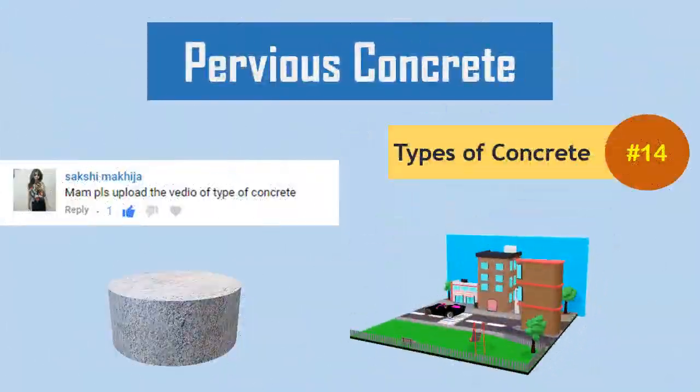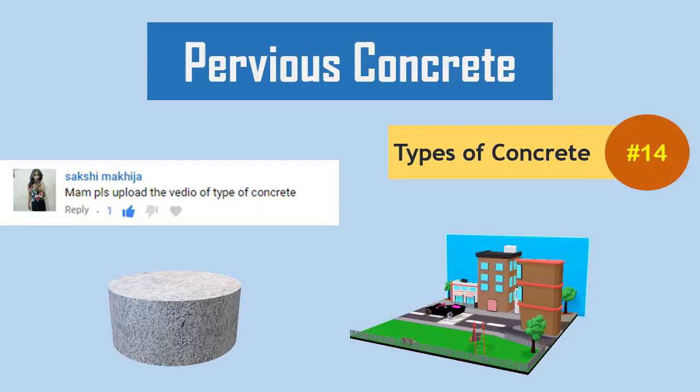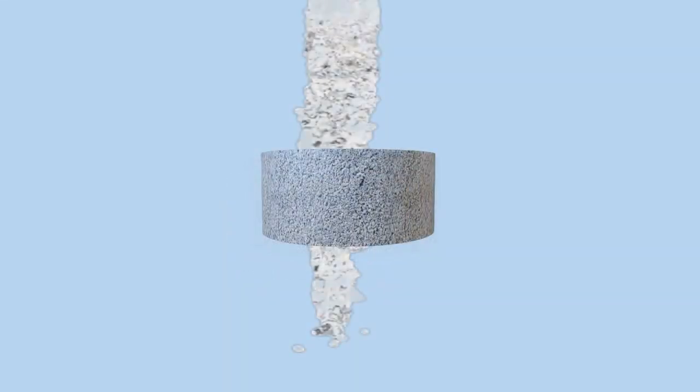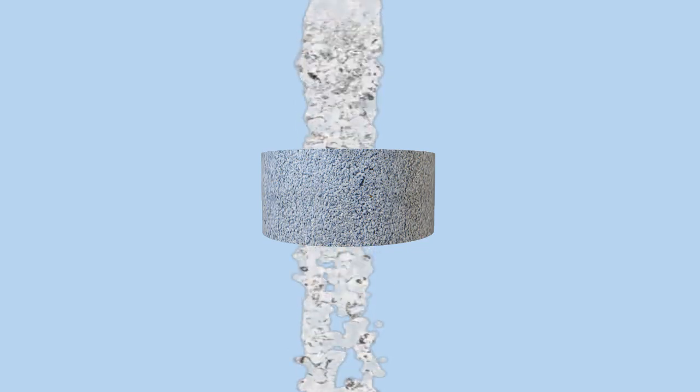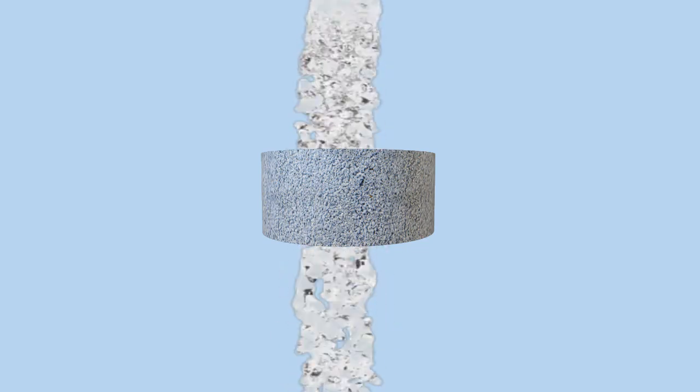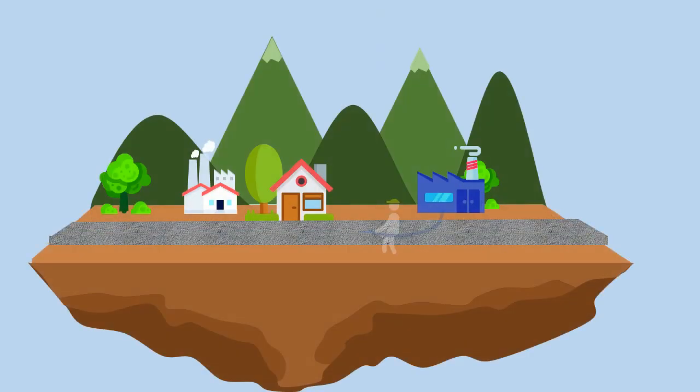Pervious Concrete is a special type of concrete which has high porosity to allow water to pass through it, thereby reducing the runoff from a site and recharging groundwater levels.